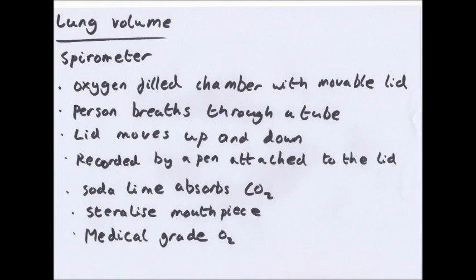Lung volume is measured using a spirometer. A spirometer has an oxygen-filled chamber with a moveable lid; the person breathes through a tube connected to the oxygen chamber. As the person breathes in and out, the lid moves up and down, and these movements are recorded by a pen attached to the lid writing on a rotating drum, creating a spirometer trace. Safety considerations include using soda lime to absorb CO2, sterilising the mouthpiece, using medical grade oxygen, and ensuring the person has no breathing difficulties, heart problems, or other medical conditions.